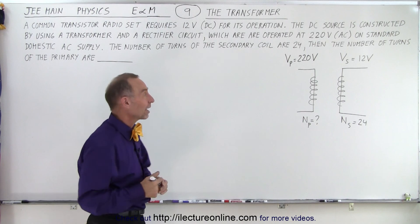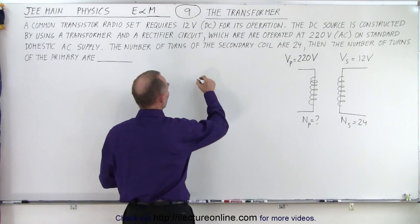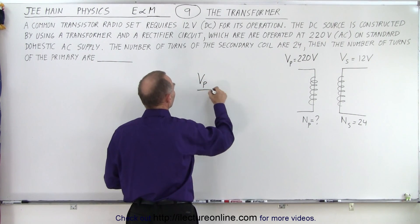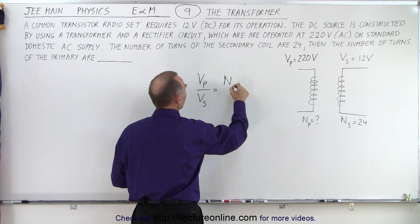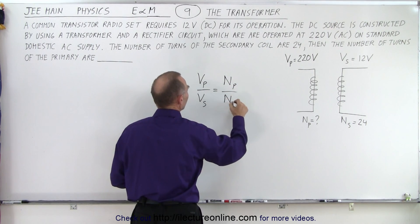And the only principle here that I have to know is that the ratio of the voltage of the primary divided by the voltage of the secondary is equal to the number of turns of the primary divided by the number of turns of the secondary.